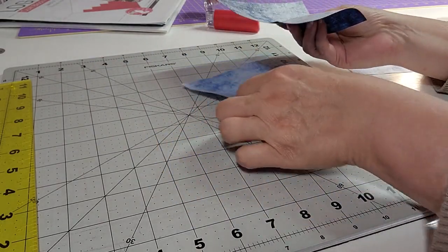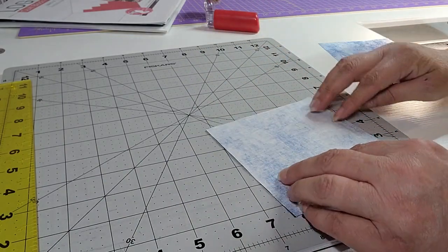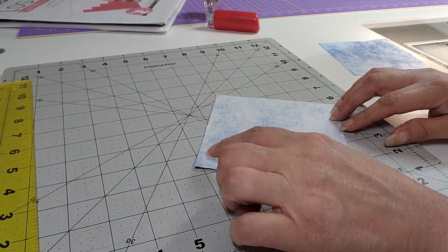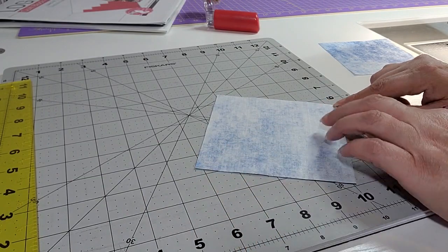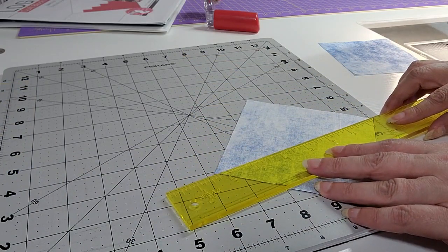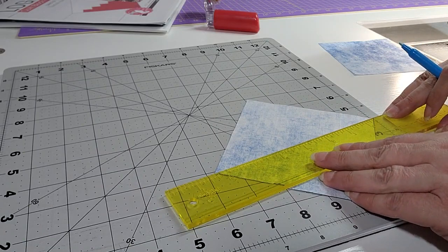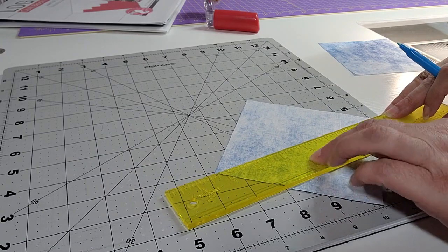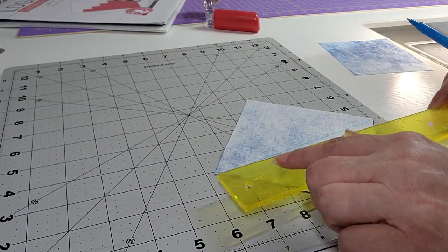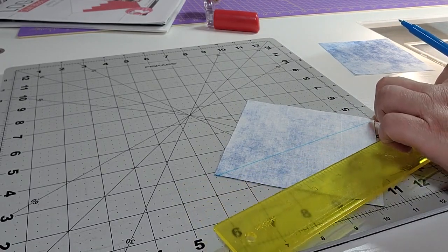The first thing that we're going to do is take our dark and our light and put your right sides together. You will want to make a mark diagonally from one corner to the other. I'm using a mark-be-gone water soluble pen. When you're making your mark, you want to keep your ruler just a tad away from that corner so that you're marking into the corner.